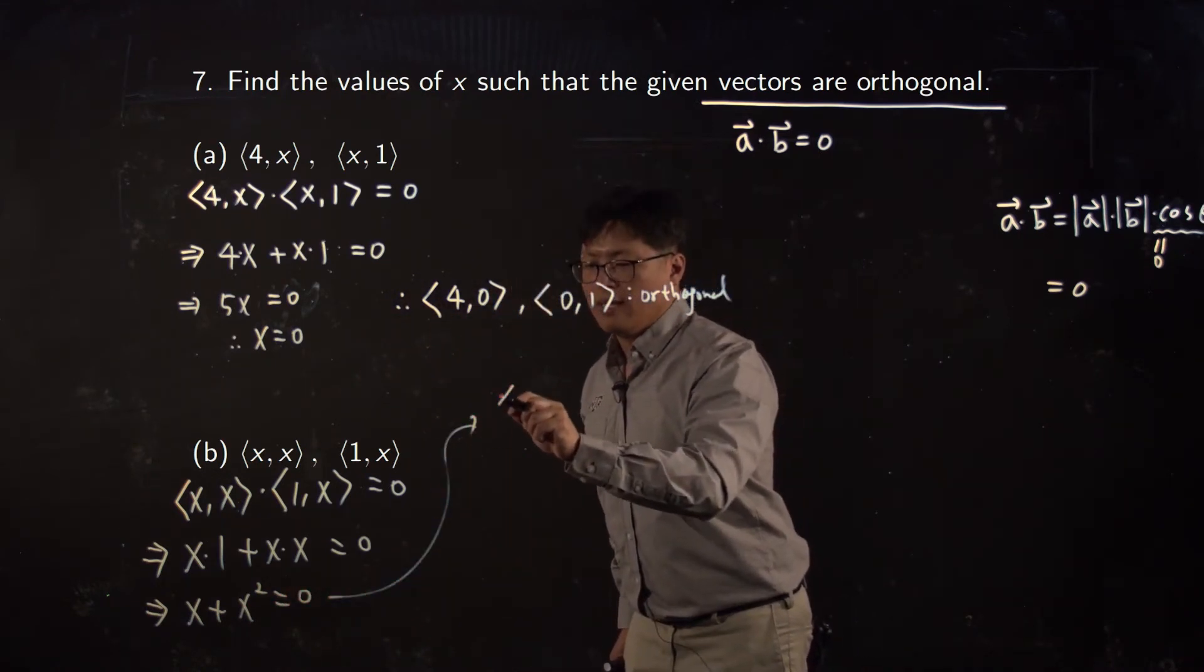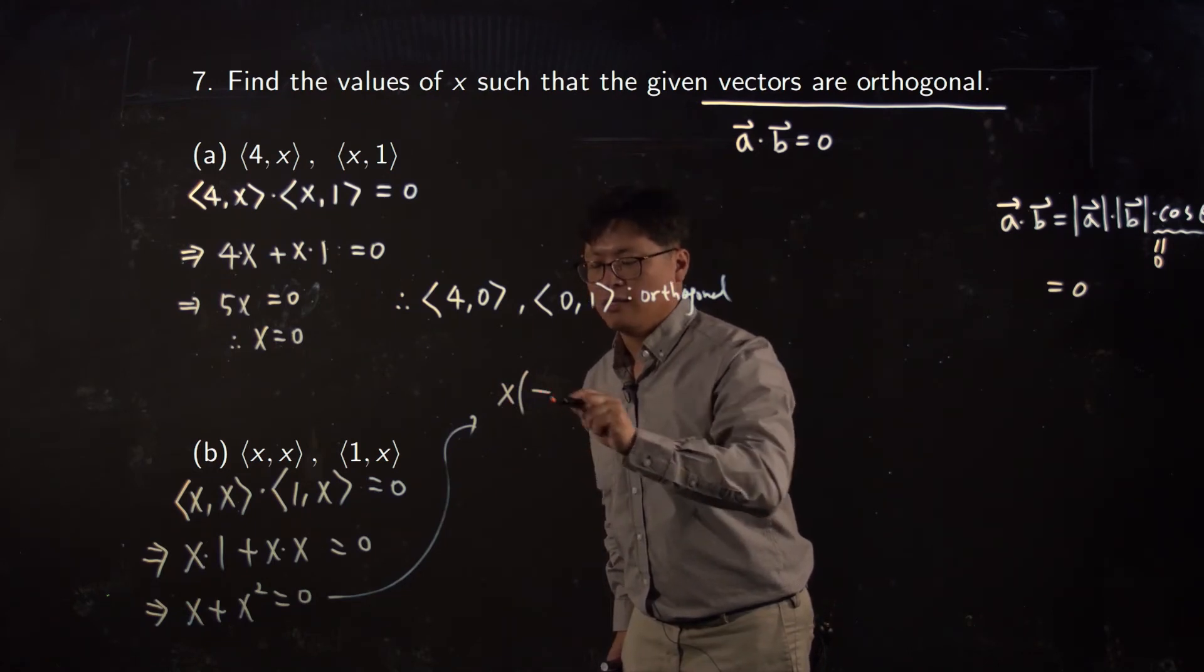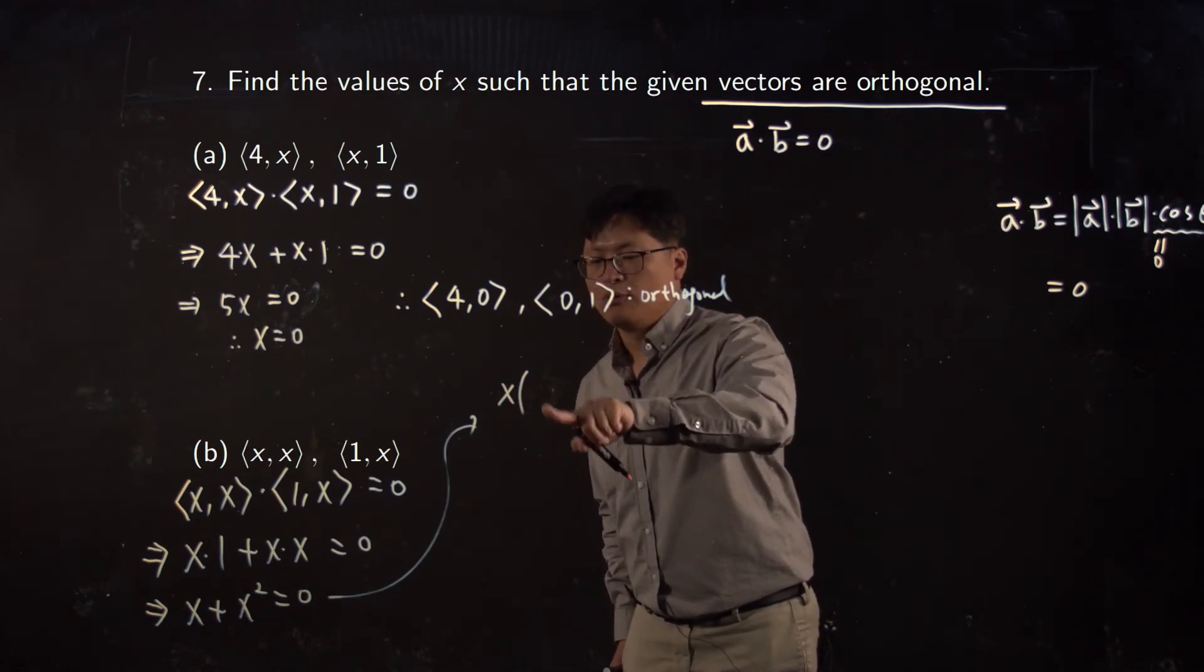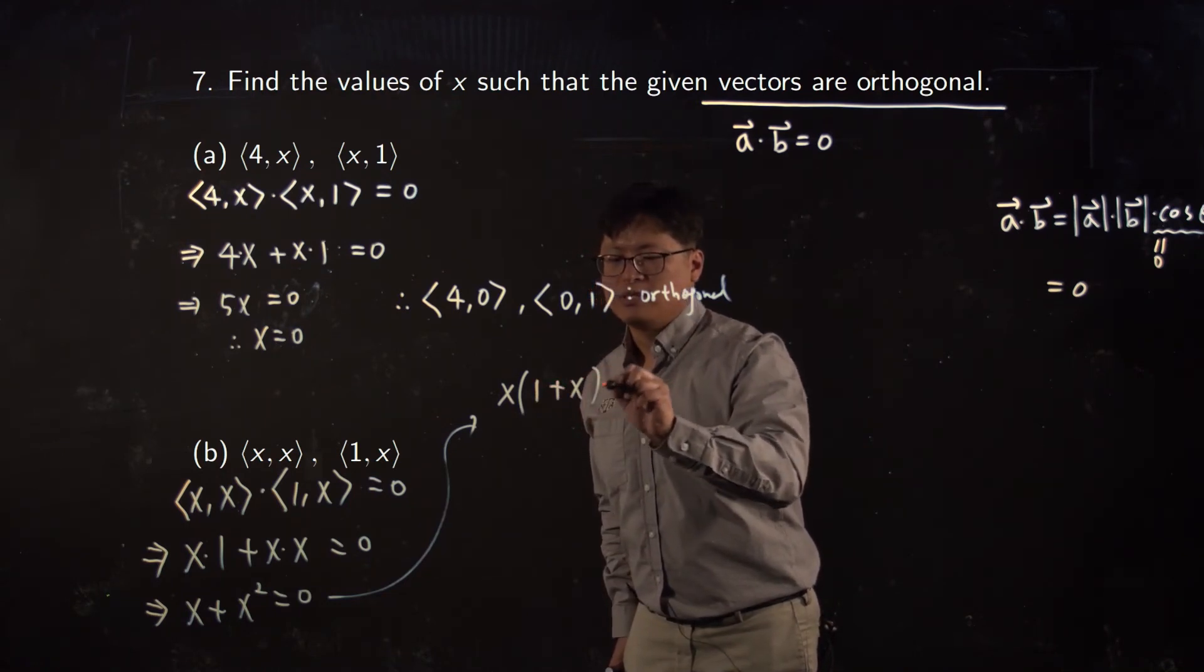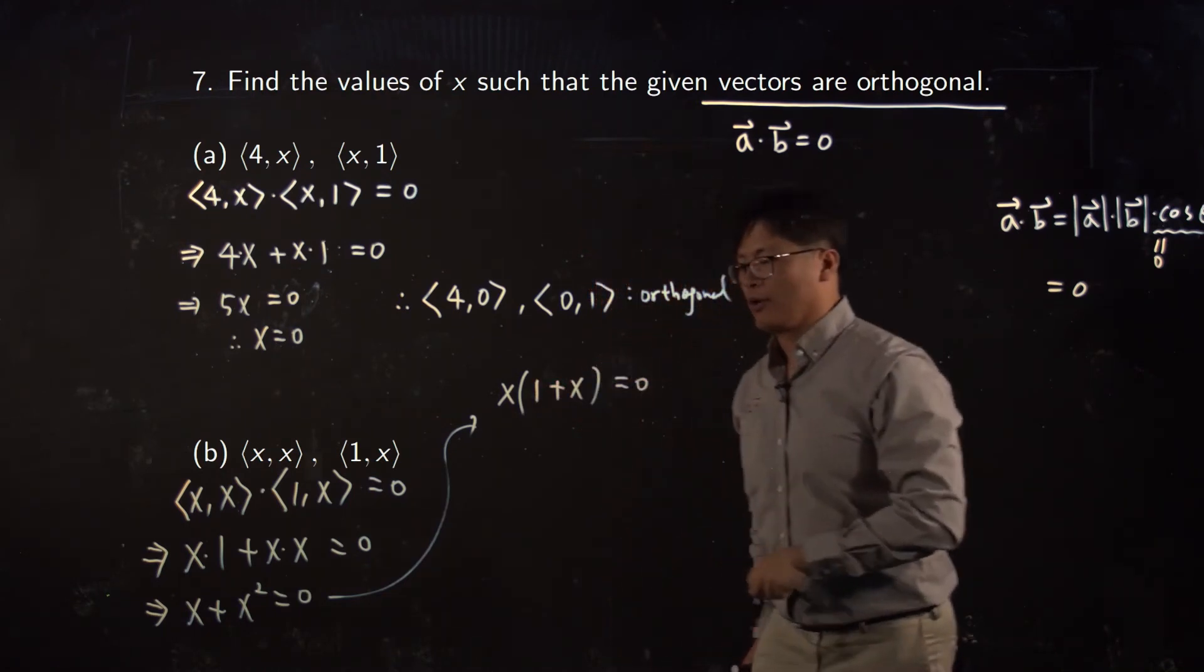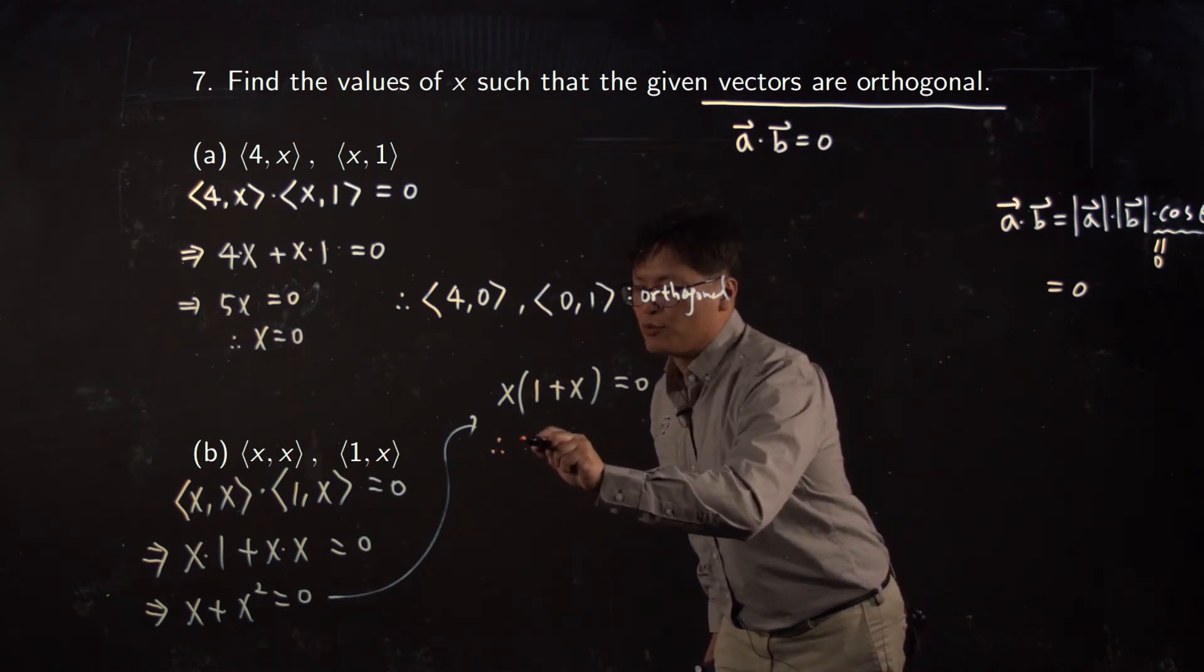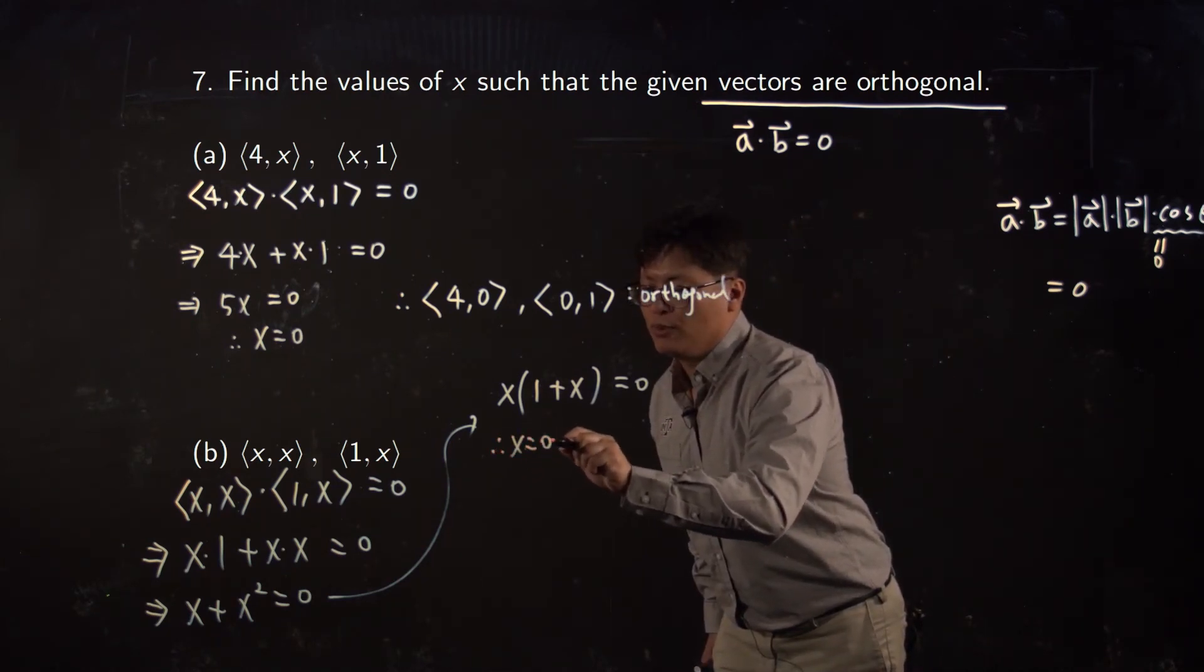Let me factor the common factor x out, pull out your common factor. Then we have (1 + x) in the parentheses that equals zero, pull it factor. Then we can easily find the solution of this. X equals zero or